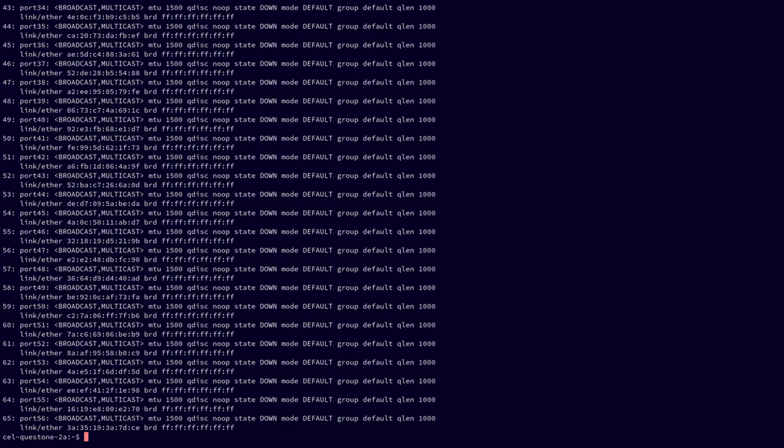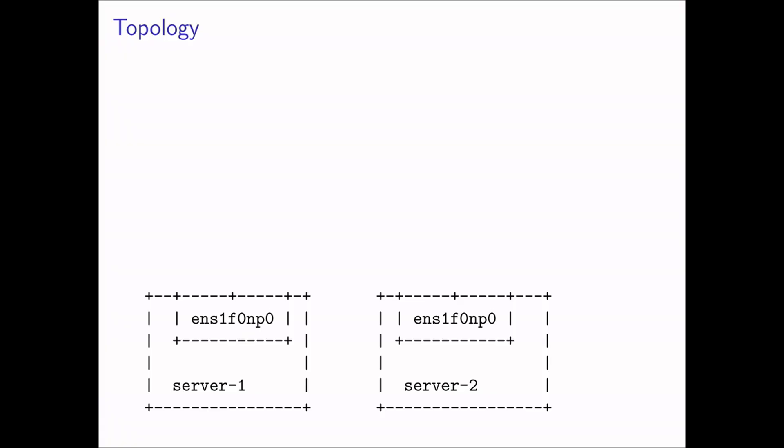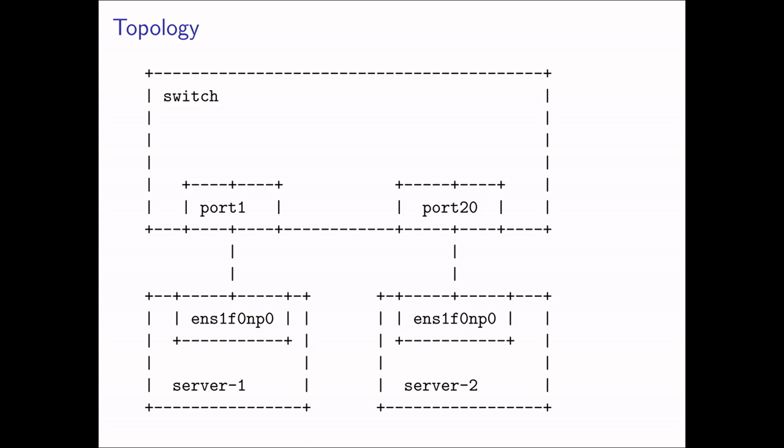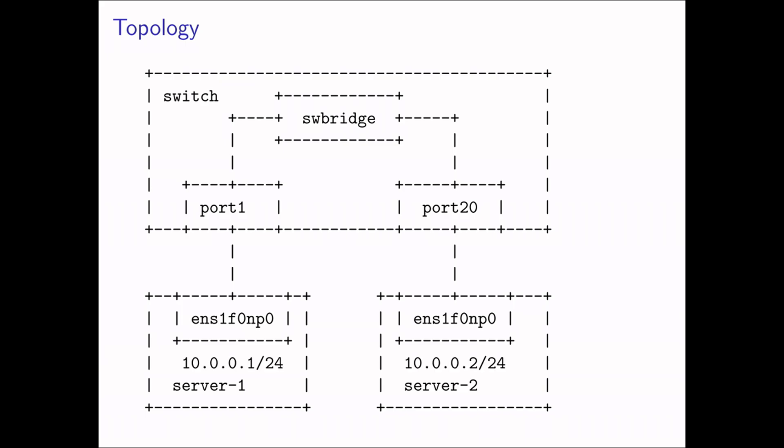Now let's move on to our switch configuration example. We have two servers, and we want to send packets from server 1 on the left to server 2 on the right. We will do this by first cabling both servers to our switch, then we will create a bridge and attach both data ports to the bridge. This is all the configuration needed on the switch, giving us layer 2 connectivity between our servers. To test the connection, we will add IPv4 addresses to our servers and then use the ping tool to verify connectivity.